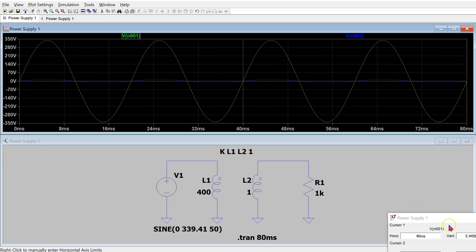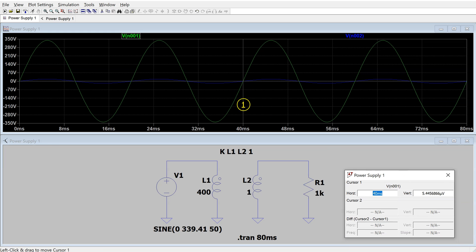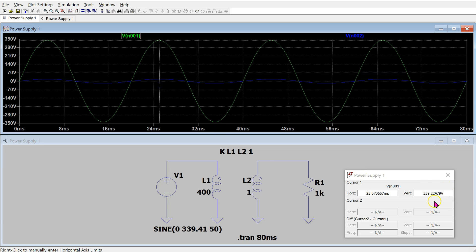We can position the cursor to the peak value. We can see that the peak value of the input is 339.3 volts, and the peak value of the output is around 17 volts as expected.